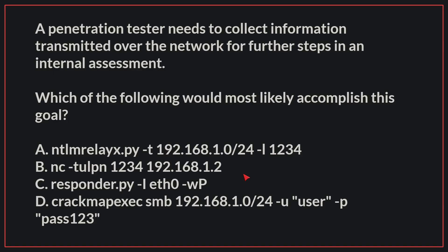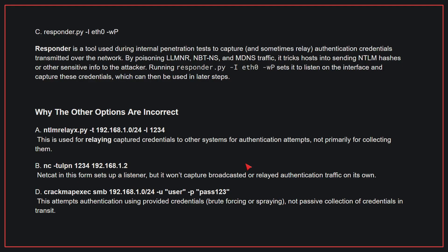A penetration tester needs to collect information transmitted over the network for further steps in an internal assessment. Which of the following would most likely accomplish this goal? The correct answer is C. Responder is a tool used during internal penetration tests to capture authentication credentials transmitted over the network. By poisoning LLMNR, NBT-NS, and MDNS traffic, it tricks hosts into sending NTLM hashes or other sensitive info to the attacker. Running Responder with -I eth0 -wP sets it to listen on the interface and capture these credentials, which can then be used in later steps.